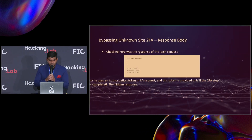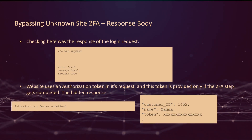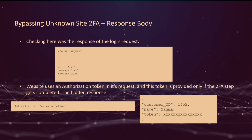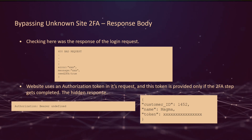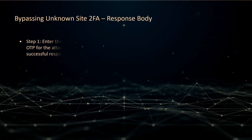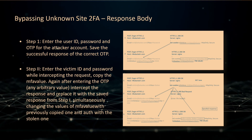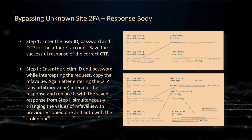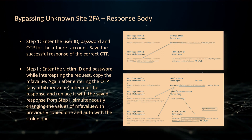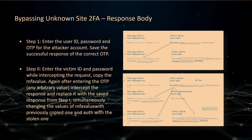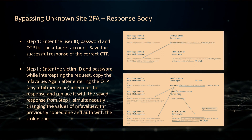Here's another classic example of bypassing 2FA — checking the response to the login request. The website uses an authorization token that is only provided when the user's 2FA is completed. If you give the application an authorization bearer or token in response to the request, it bypasses 2FA. This is what a conventional response looks like, and this is the changed response where you're actually manipulating the response body.